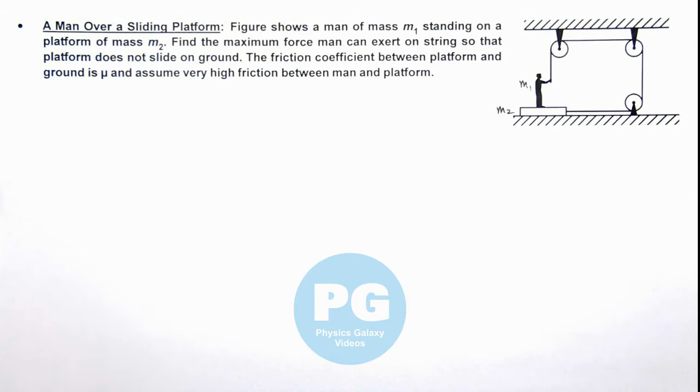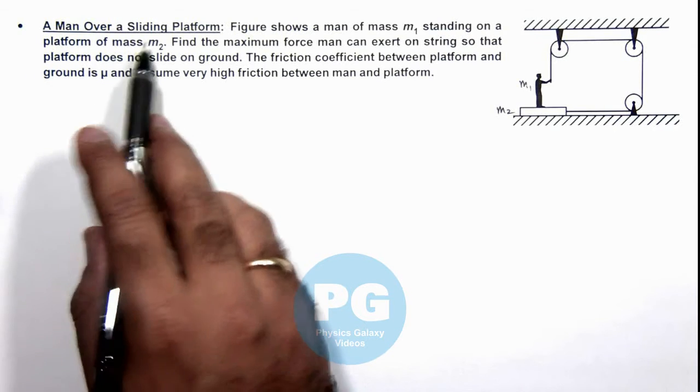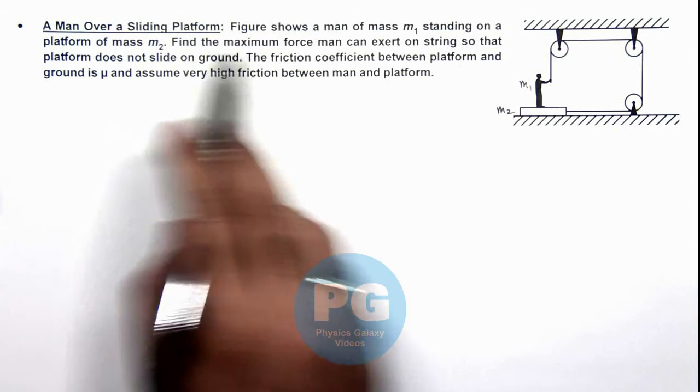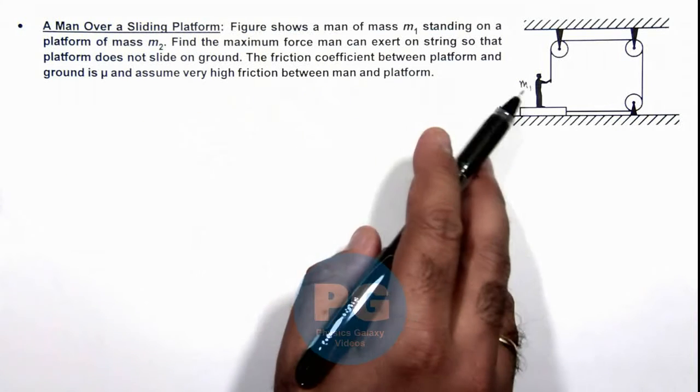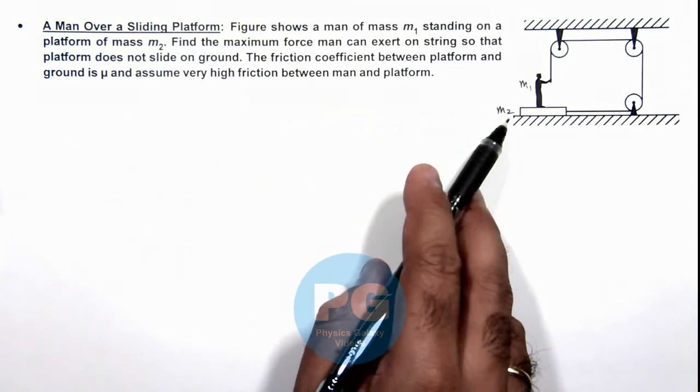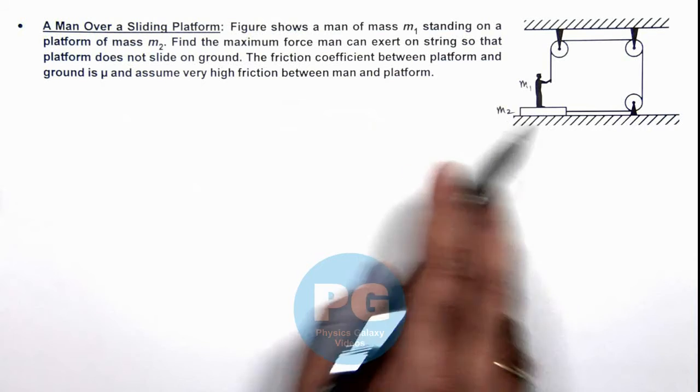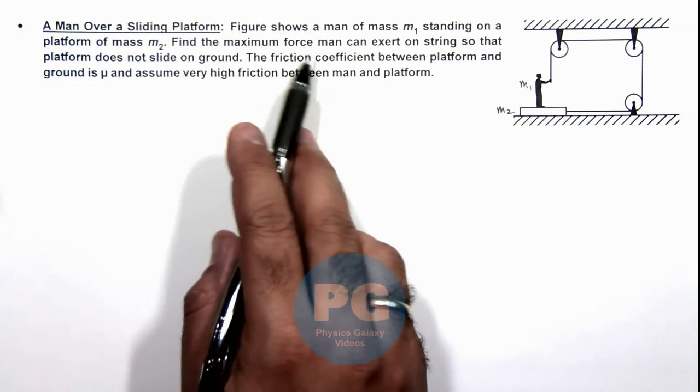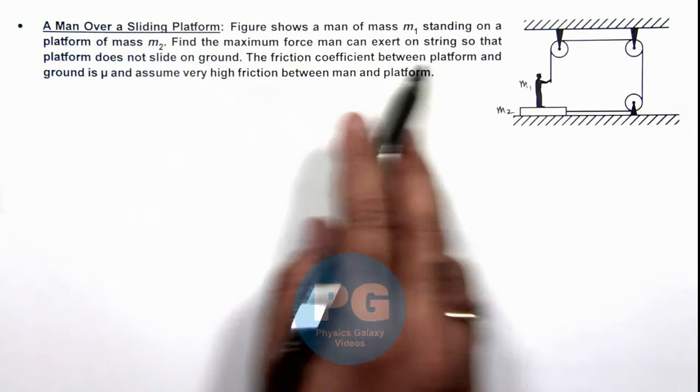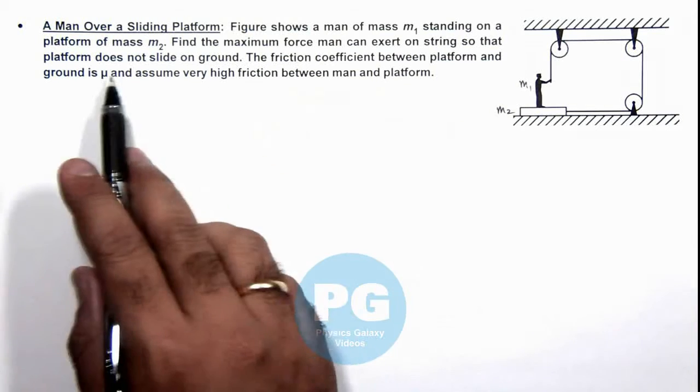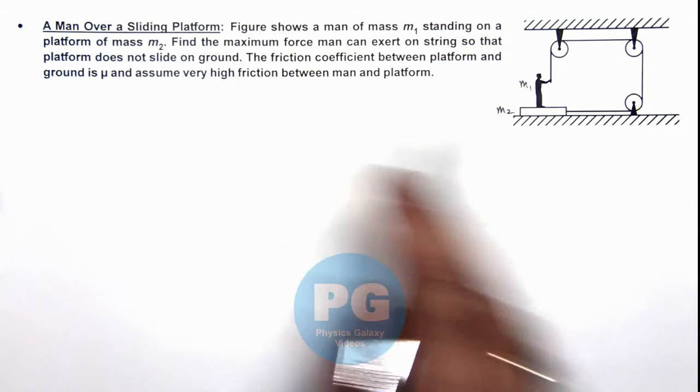In this illustration we'll discuss a man over a sliding platform. The figure shows a man of mass m1 standing on a platform of mass m2. We are required to find the maximum force the man can exert on the string so that the platform does not slide on the ground.